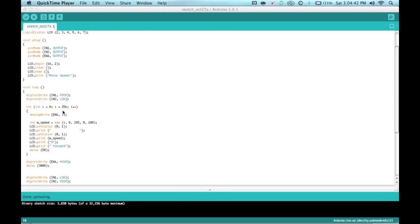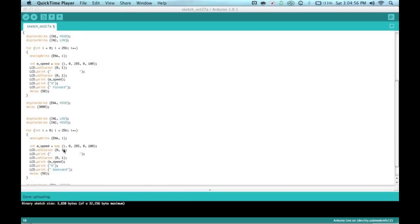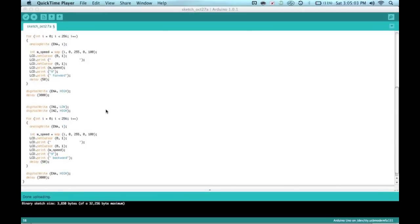In that, a simple analog write command to the enable pin pulses it high at increasing duty cycles. I've just mapped that value to a percent value and printed that as well on the screen. Here, we've just made it stay at full speed for 3 seconds so you can actually see what it looks like.